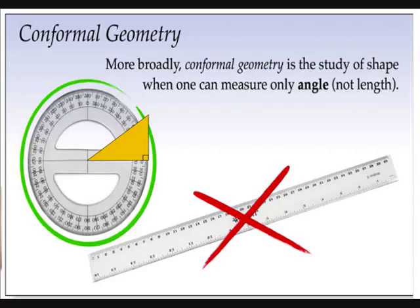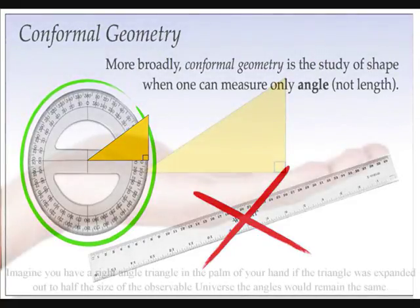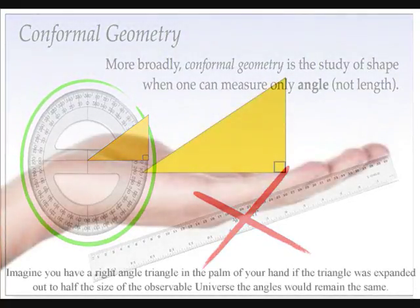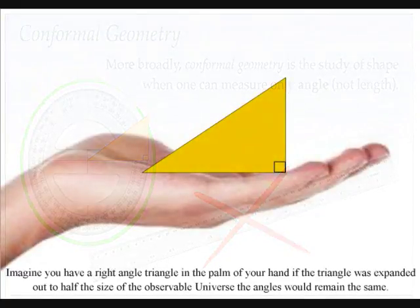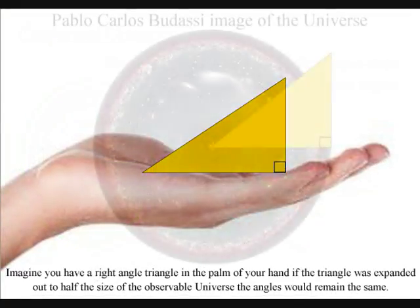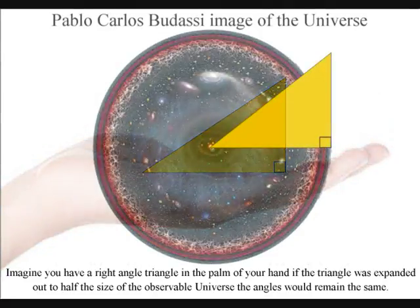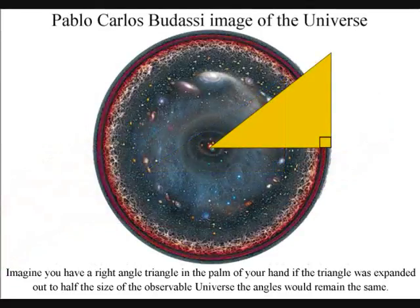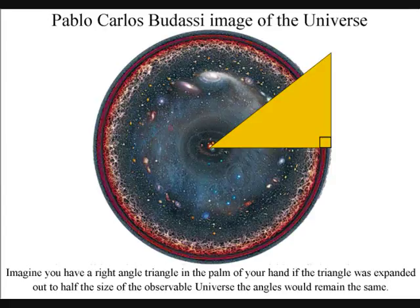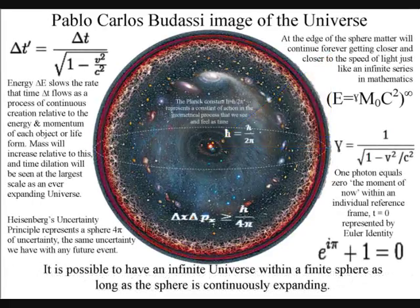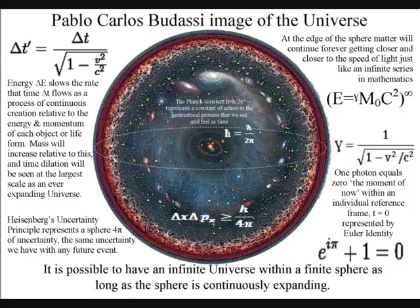In conformal geometry, angles remain the same while losing the notion of scale. Imagine you have a right-angle triangle in the palm of your hand. If the triangle was to expand out to half the size of the observable universe, the angles would remain the same. This information supports the idea that the universe could be based on one universal geometrical process, from the very small to the very large.